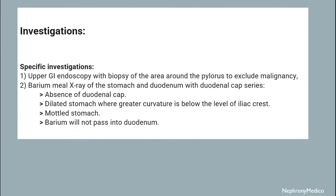Specific investigations include upper GI endoscopy with biopsy of the area around the pylorus to exclude malignancy, and barium meal study of the stomach and duodenum with duodenal cap series, which shows absence of the duodenal cap, dilated stomach where the greater curvature is below the level of the iliac crest, atonic stomach, and barium will not pass into the duodenum.